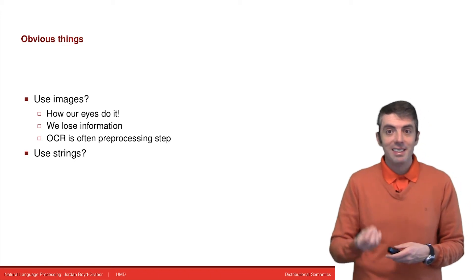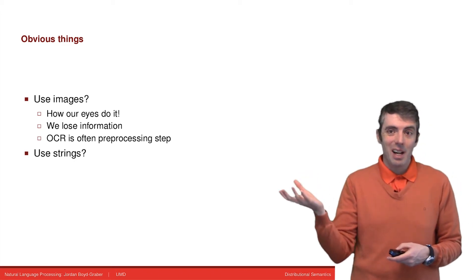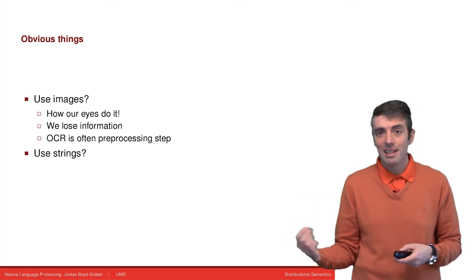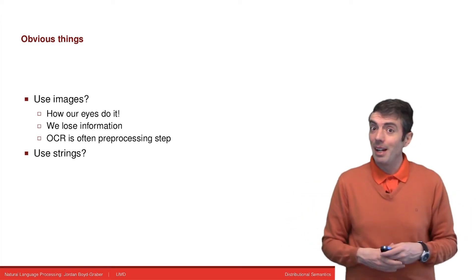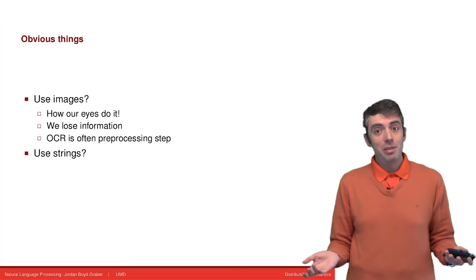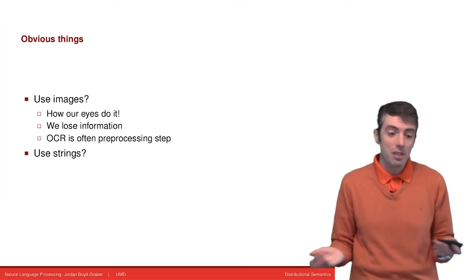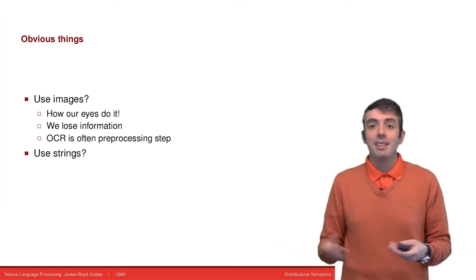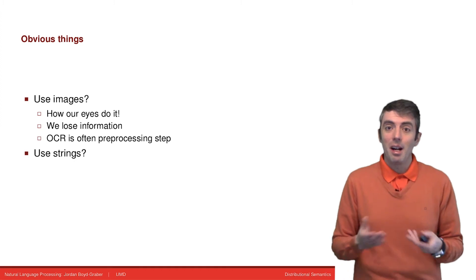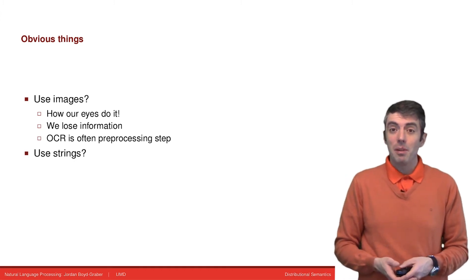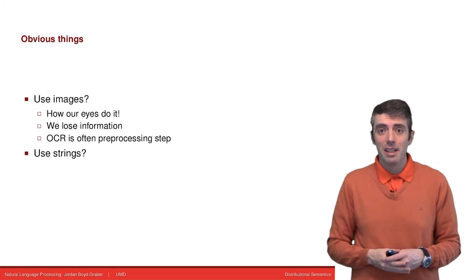There are other arguments why you might want to do this. For instance, if a document is written in Comic Sans or Gothic font, the font tells you something about what the document is saying. But the downside is that you've basically turned optical character recognition into a preprocessing step, and that's a whole research area unto itself.